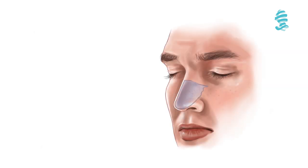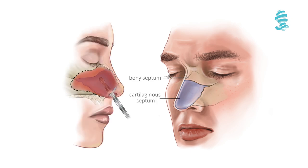The septum, which is the midline partition of the nose, is made of cartilaginous and bony portions and is covered by the lining called the mucosa.